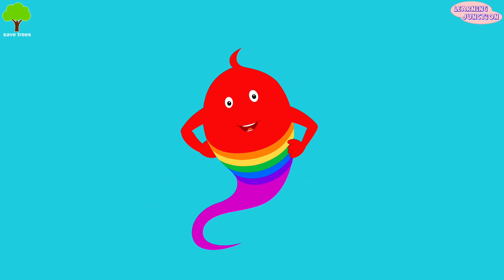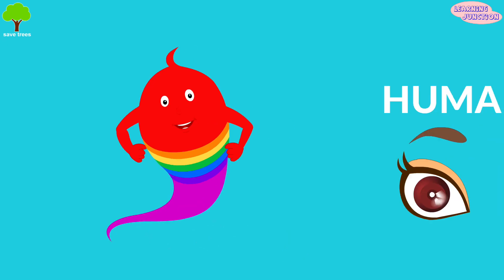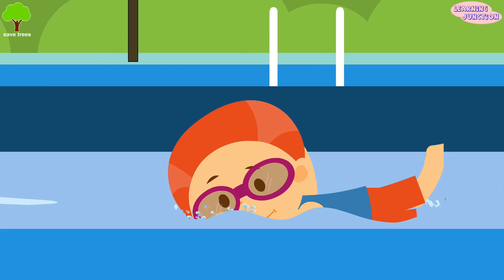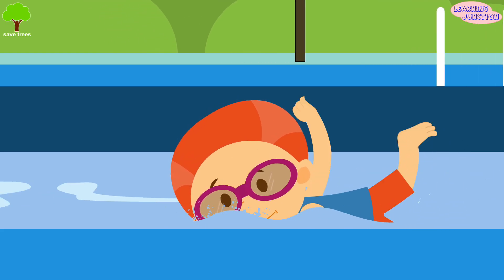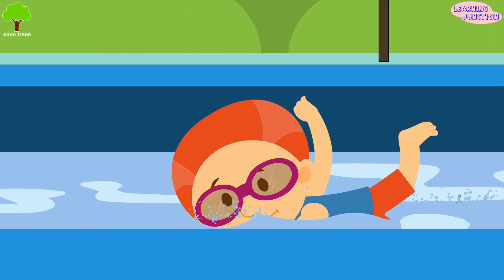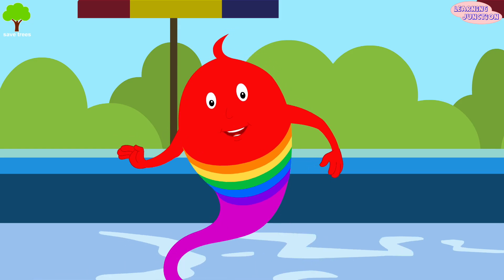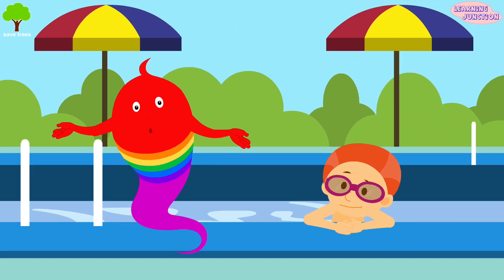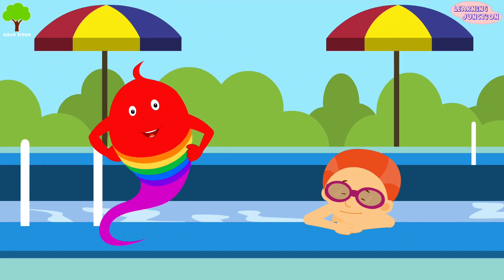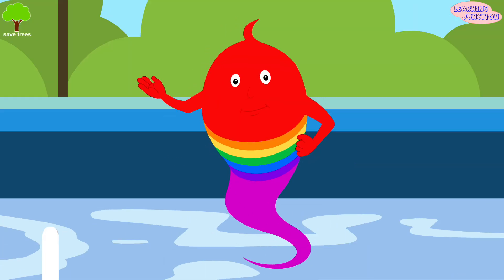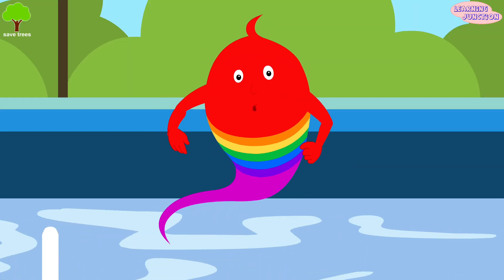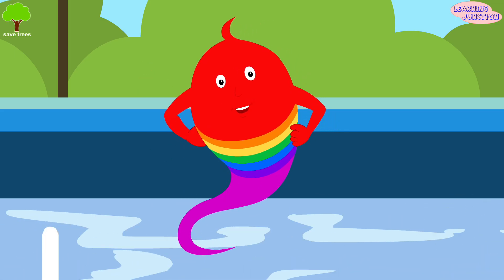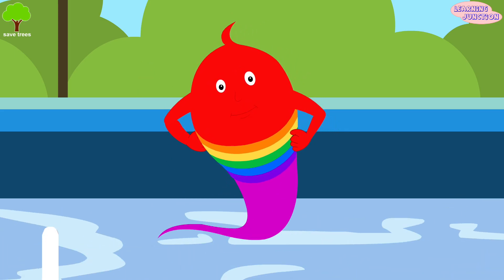Hello friends. Today we'll learn about the human eye. We see through our eyes. Sight is one of the five senses that help us to get knowledge about what's going on in the world around us. So, let's first see what are the parts of our eye and what they do.